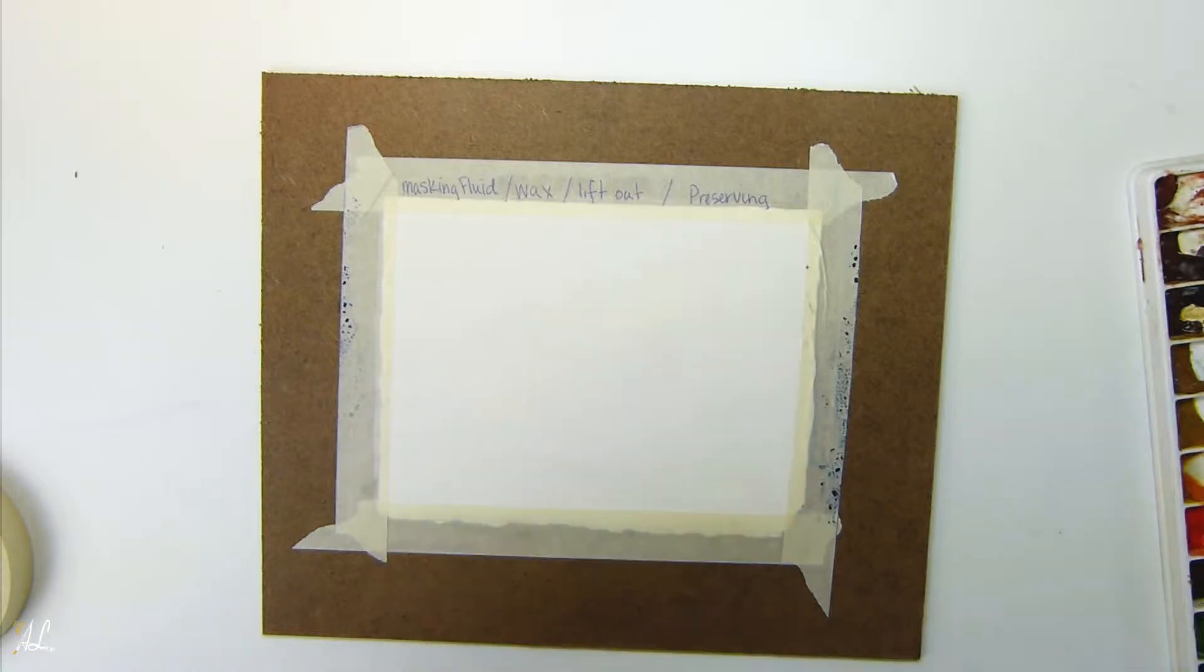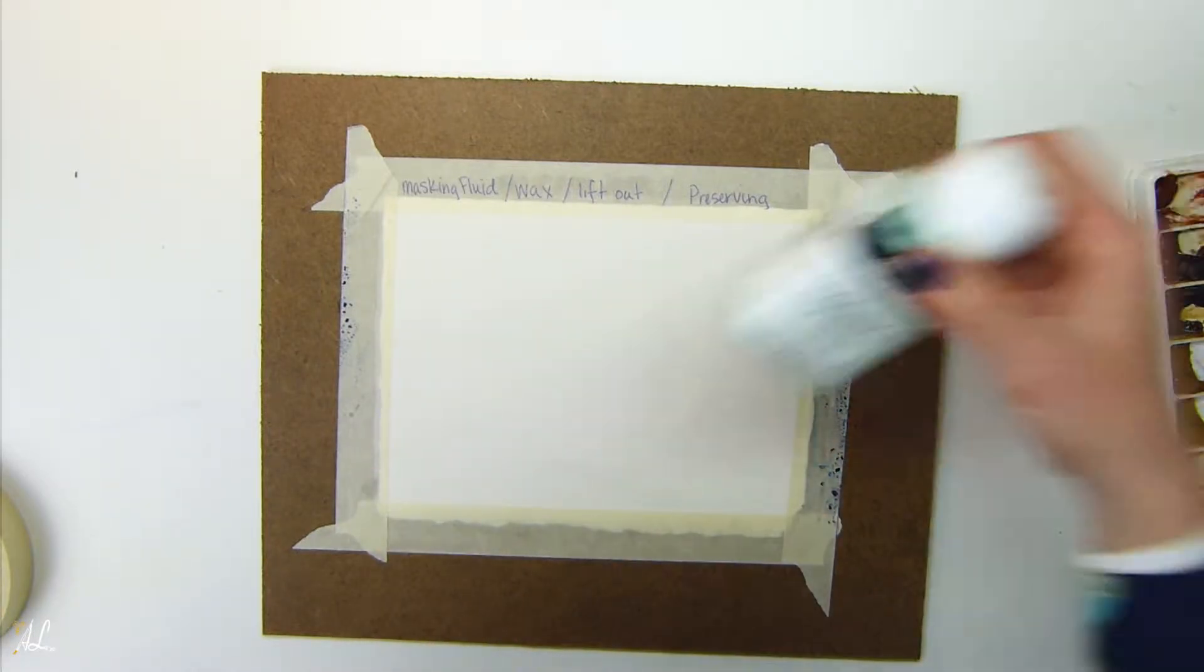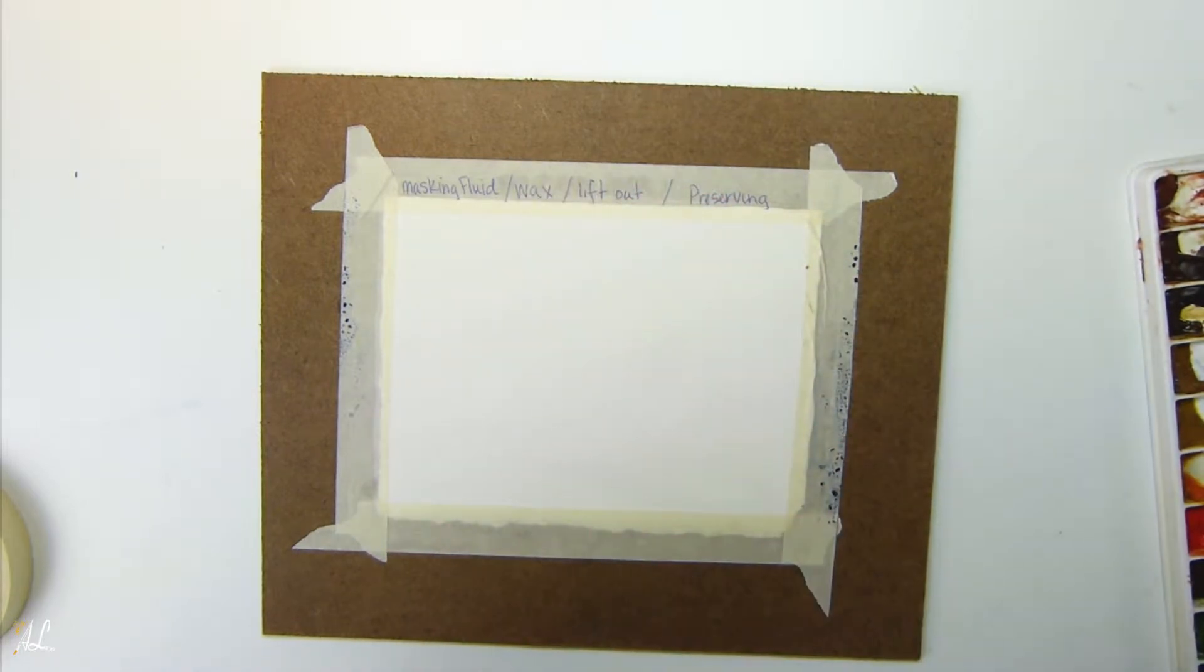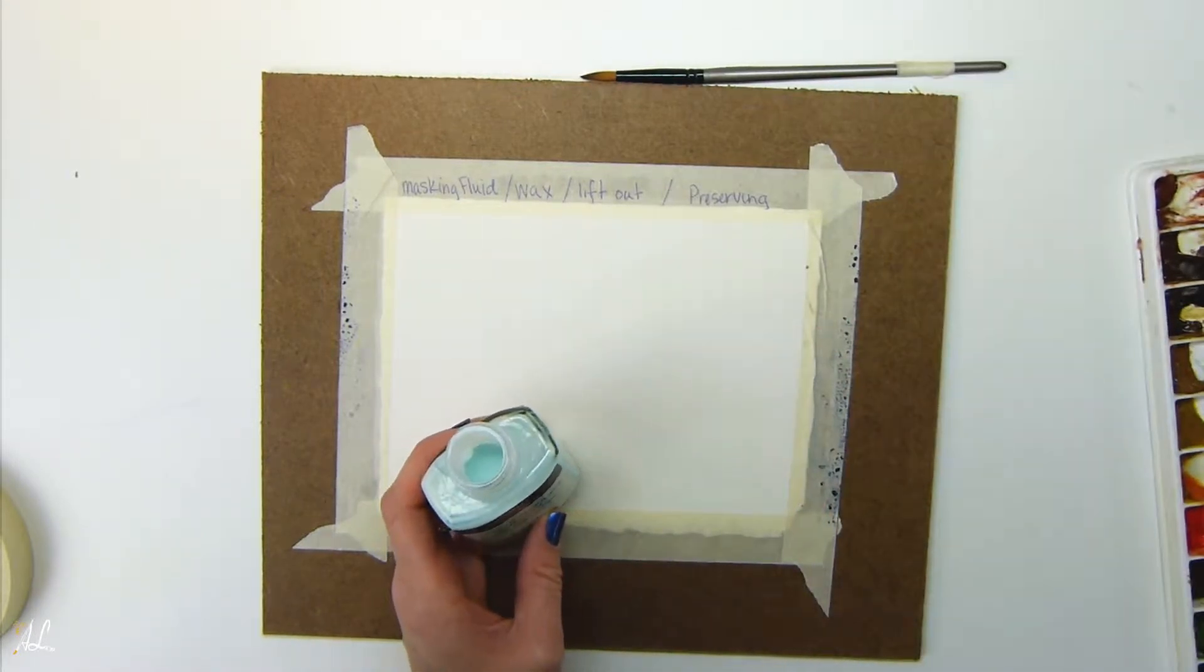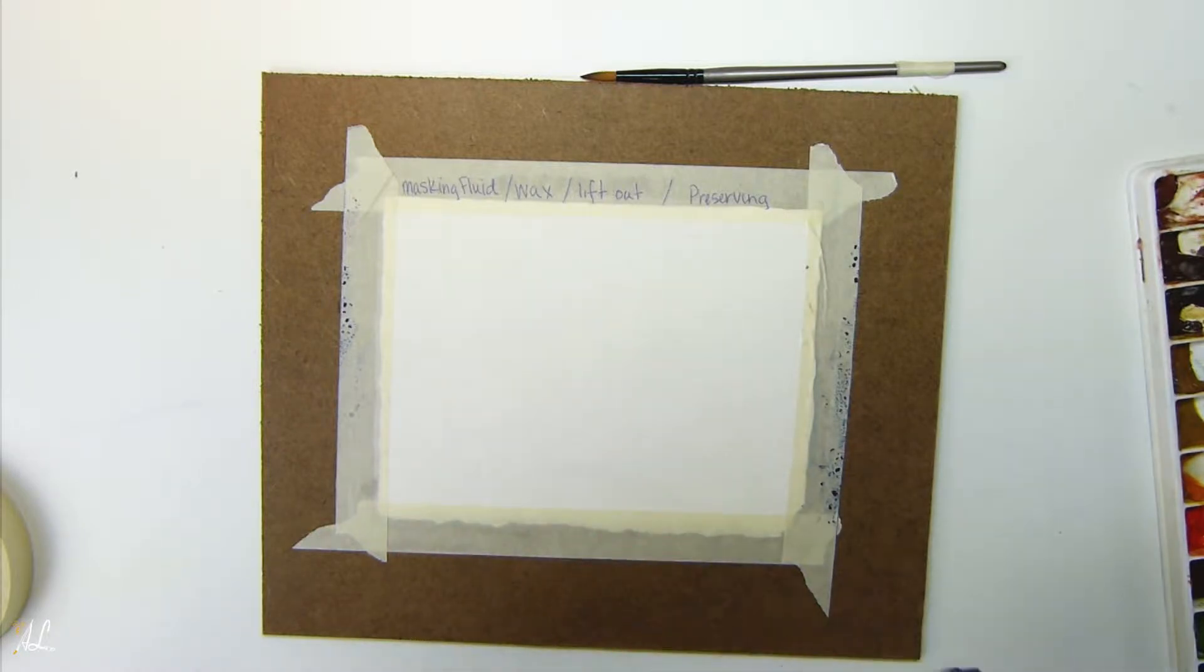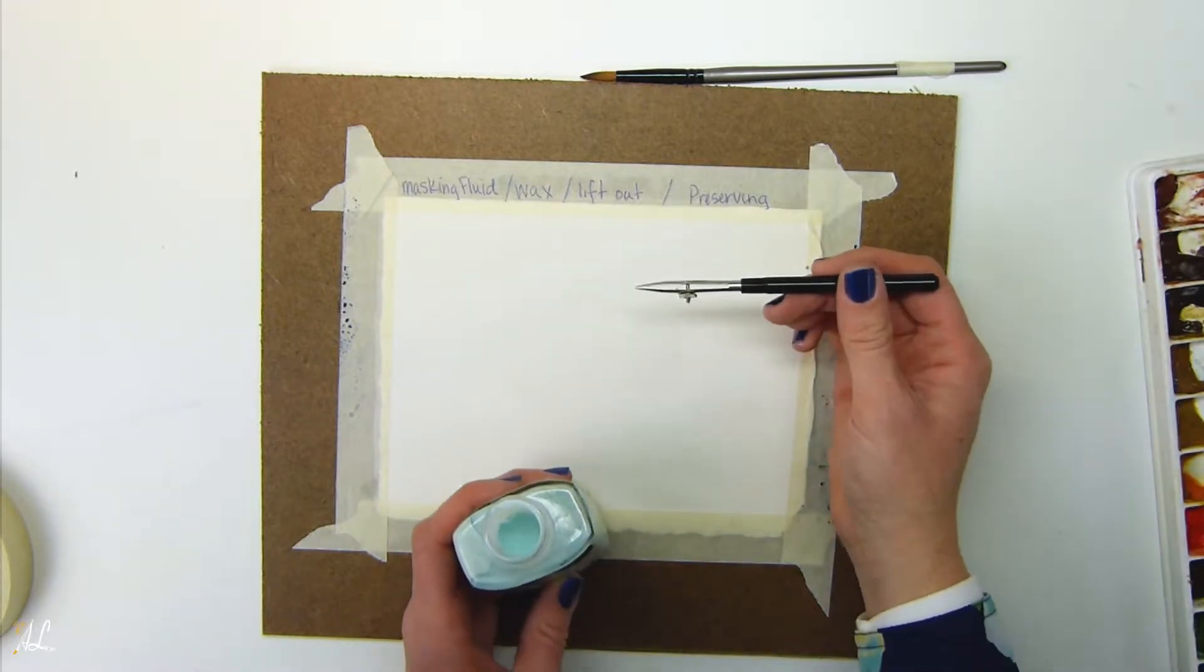Here I'm going to show you four things that we're going to use to leave our whites. First thing is our masking fluid. It can come in a variety of colors: blue, yellow, green, orange. To apply it you can either use a brush or a dip pen.